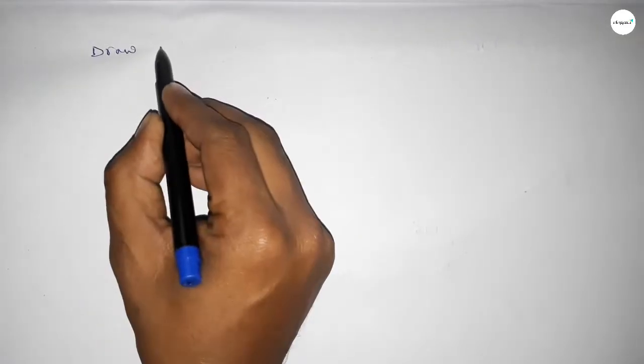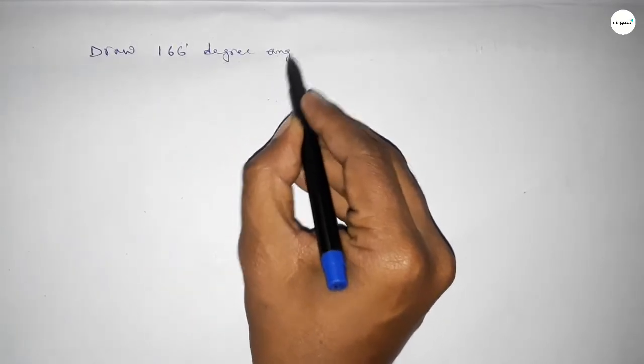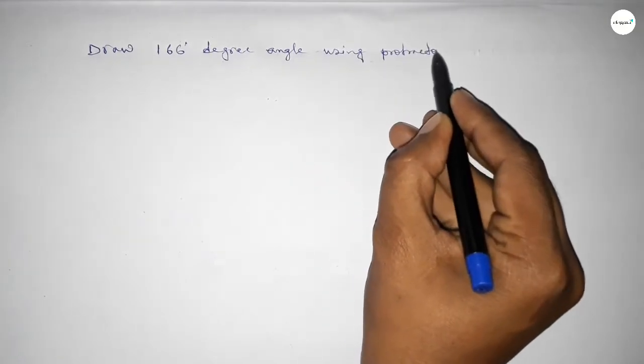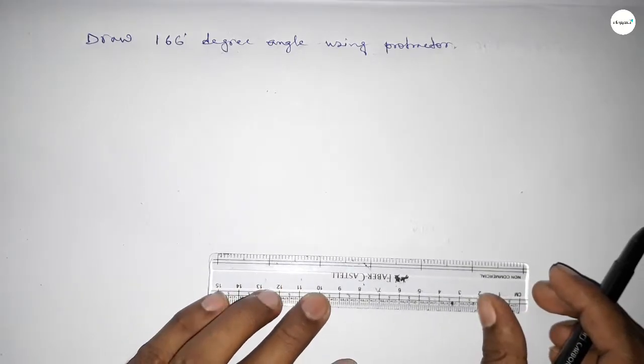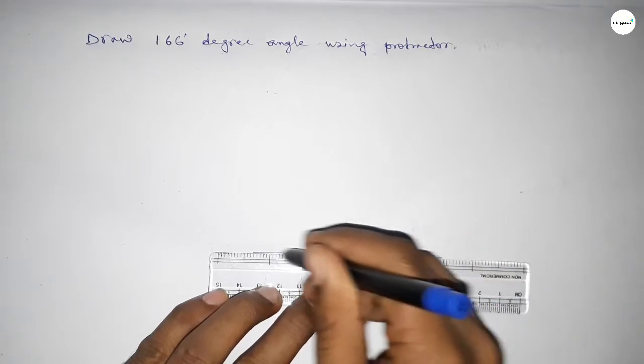Hi everyone, welcome to A Size Chair Classes. Today in this video we have to draw 166 degree angle by using protractor. So let's start the video. First of all, we have to draw here a straight line of any length.